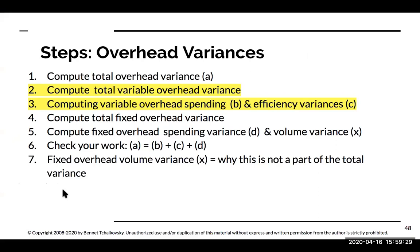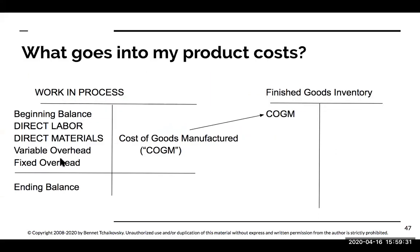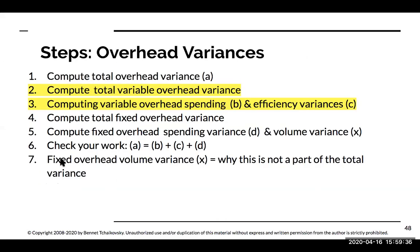But now I need to break that down and look at the components. Overhead is made up of two parts: variable and fixed. So I need to compute first what is my total variable overhead variance, and then drill down into that a little bit more in terms of the variable overhead spending and efficiency variances.